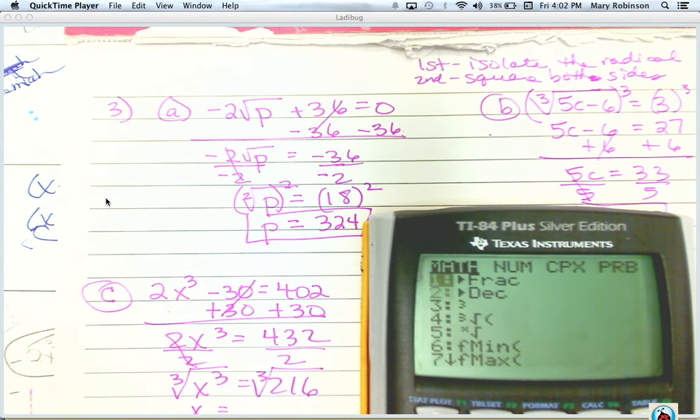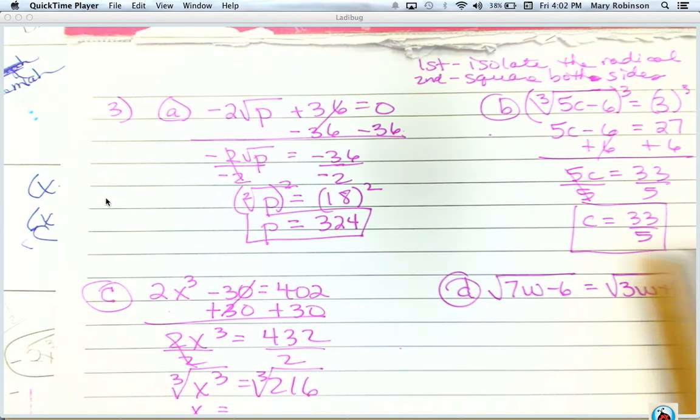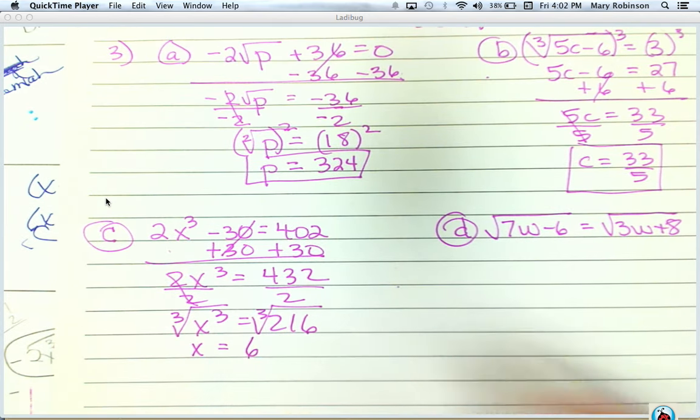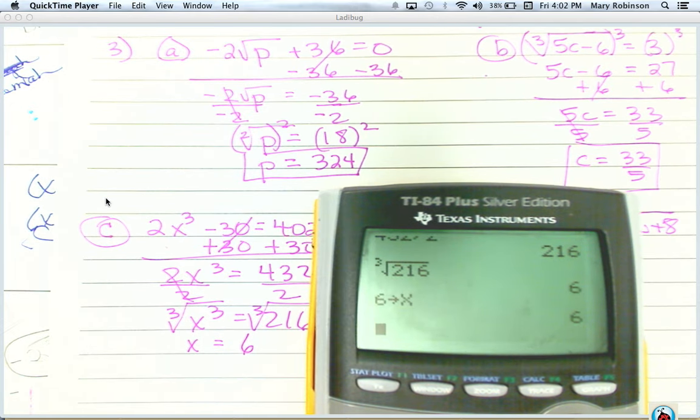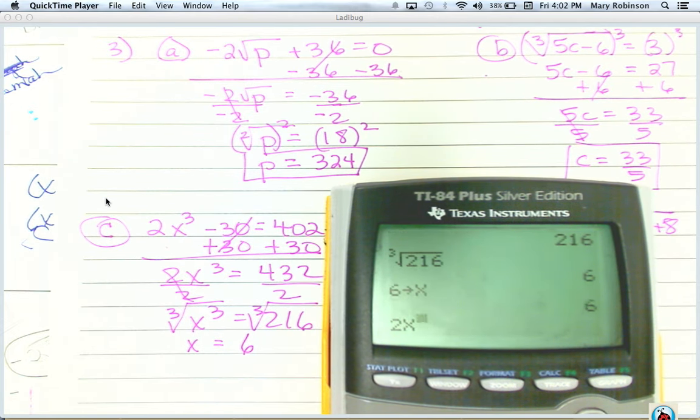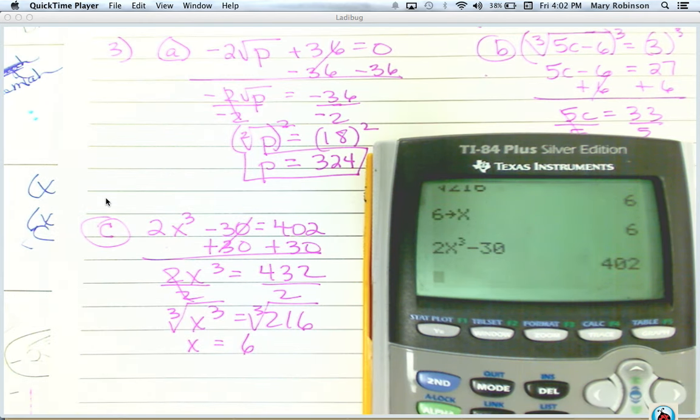So if we take next the cube root of both sides to undo x cubed, the cube root of 216 is 6. So let's take our value of 6 and store it as x and type in 2x to the third minus 30. If that's correct, then it will come out to equal 402, the original answer. And it does.